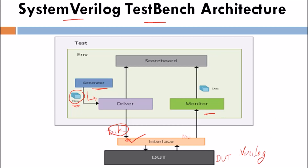Next we will see another verification component — the monitor. The DUT processes the input data and sends the results to the output. The monitor picks up the processed data, converts it into data objects, and sends it to the scoreboard.